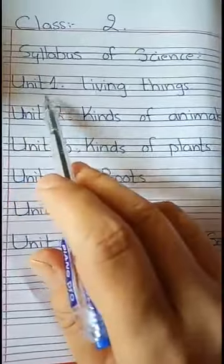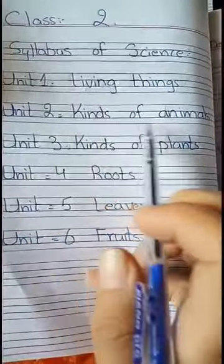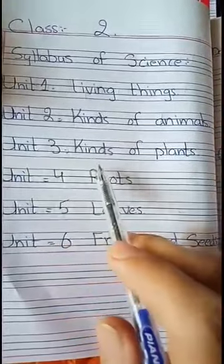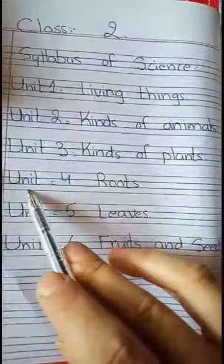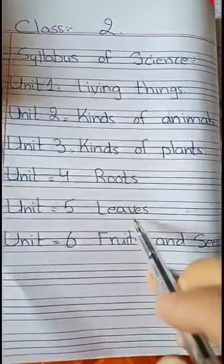Unit 1: Living Things, Unit 2: Kinds of Animals, Unit 3: Kinds of Plants, Unit 4: Roots, Unit 5: Leaves.